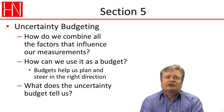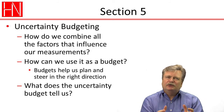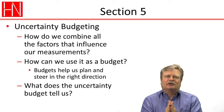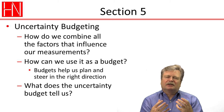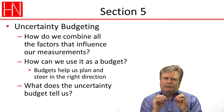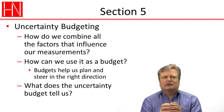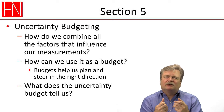In section five, we're going to talk about uncertainty budgeting and how we combine the factors that influence our measurement into an entire budget, and how we use the uncertainty calculation as a budget. Budgets help us plan and steer in the right direction — we do that with a money budget or a business budget. Likewise, here we use the uncertainty budget to help us adjust our measurement and measuring process, making sure we don't do things that aren't really necessary, and that we do the things that are important to keep the measurement as good as we need it to be. Then we're going to talk about what the uncertainty budget tells us and what we quantify when we quantify the uncertainty.